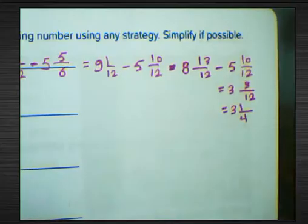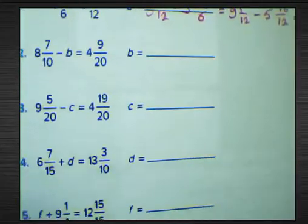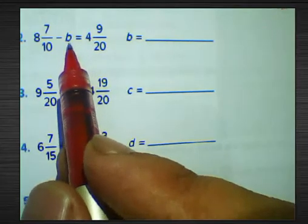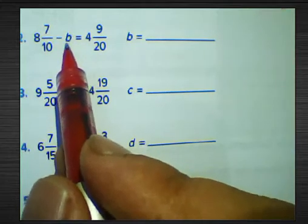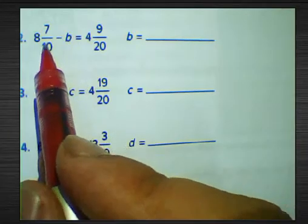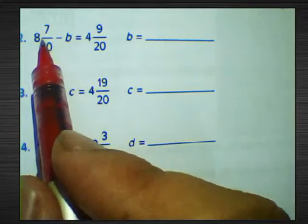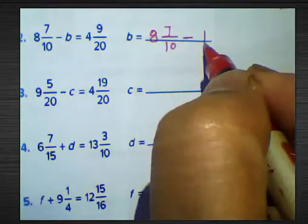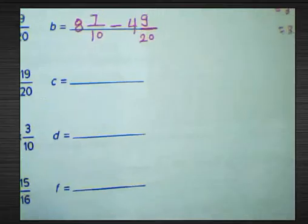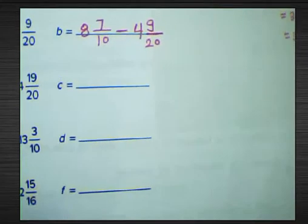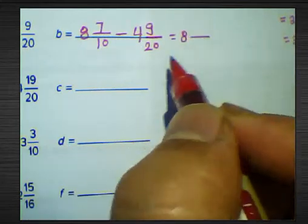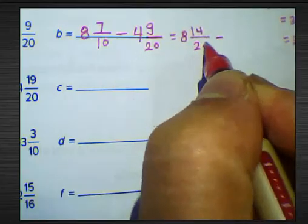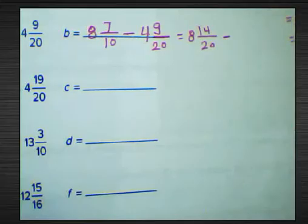Question number two: 8 and 7 over 10 subtract by p equals 4 and 9 over 20. We want to find p. We find p by taking the difference between the greater number and the smaller: 8 and 7 over 10 subtract by 4 and 9 over 20. The LCM of 10 and 20 is 20. Convert: multiply numerator and denominator by 2, giving 2 times 7 equals 14, denominator 20.